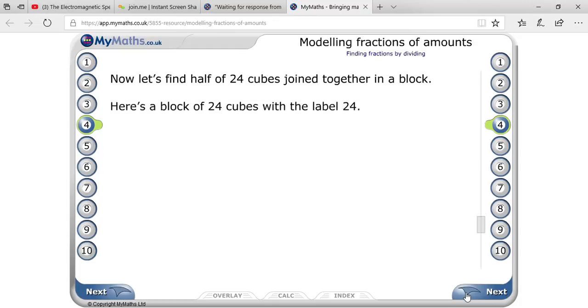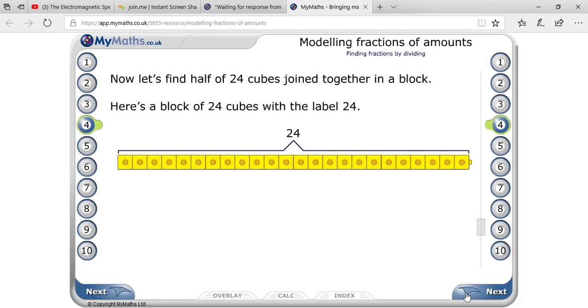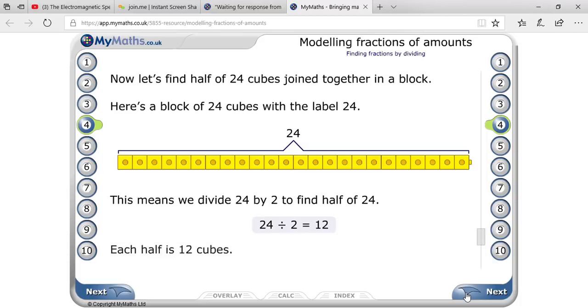So first of all, 24 blocks will be this, and then you have to divide that into half. Half means you have to divide all the 24 into two equal parts. When you divide 24 by 2, then you will get 12.